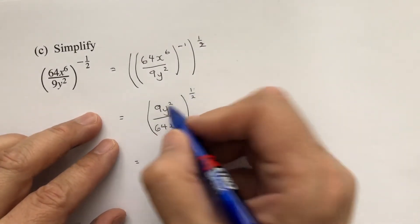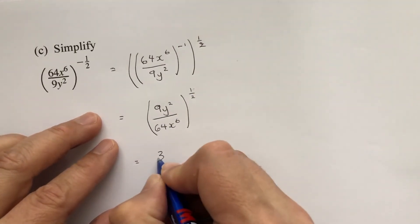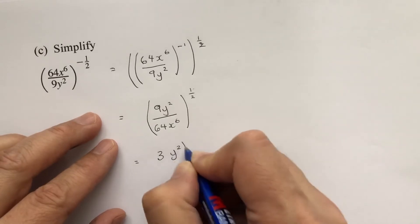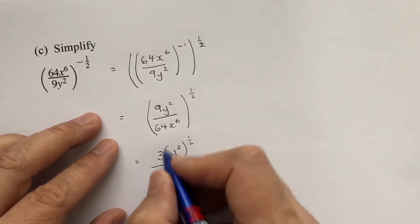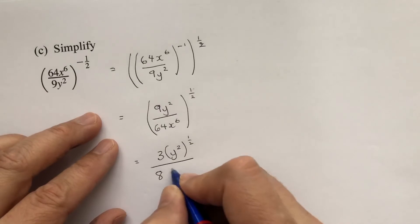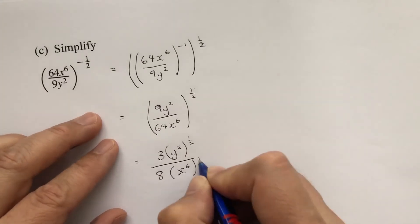So it's square rooting. Square root of 9 is 3, and then we've got y squared to the power of a half, over square root of 64 is 8, and then x to the power of 6 to the power of a half.